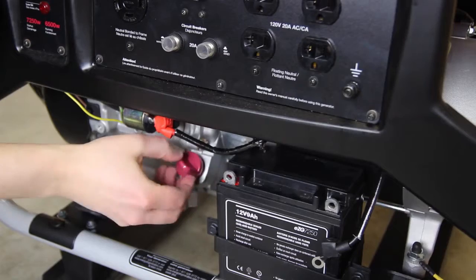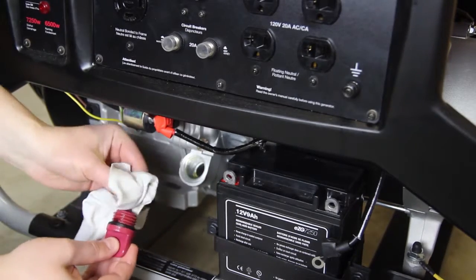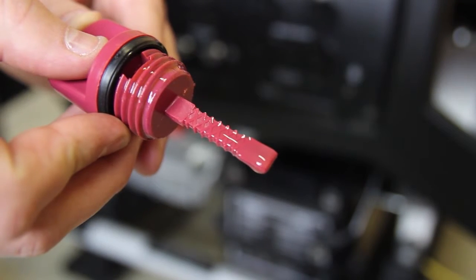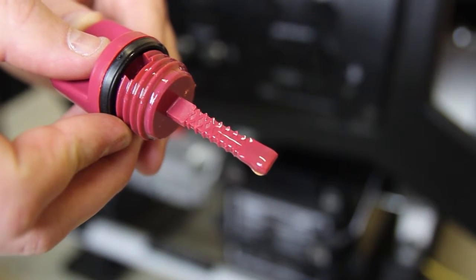Take out the oil filler cap and clean the dipstick. Check the oil level by reinserting the oil filler cap without rotating it. Remove the oil filler cap and examine the oil level.